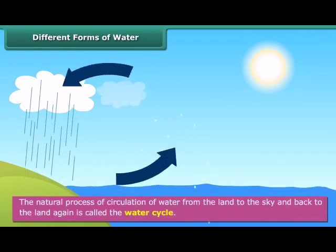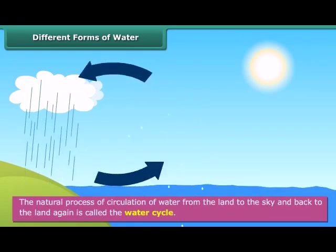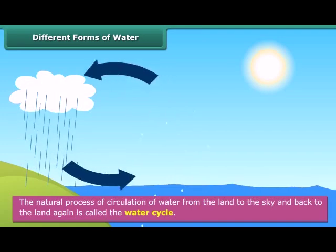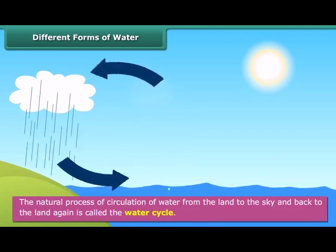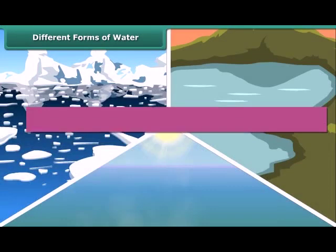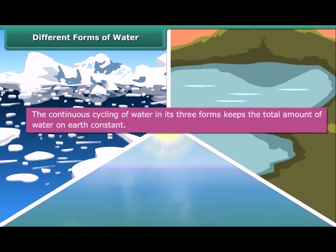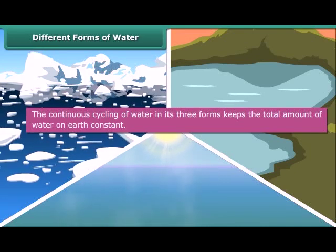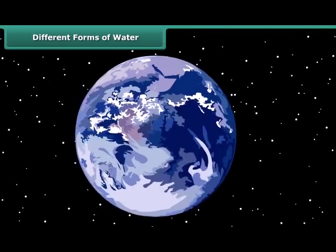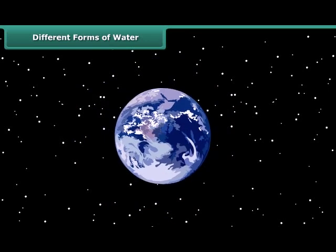The natural process of circulation of water from the land to the sky and back to the land again is called the water cycle. The continuous cycling of water in its three forms keeps the total amount of water on earth constant even when the whole world is using it.